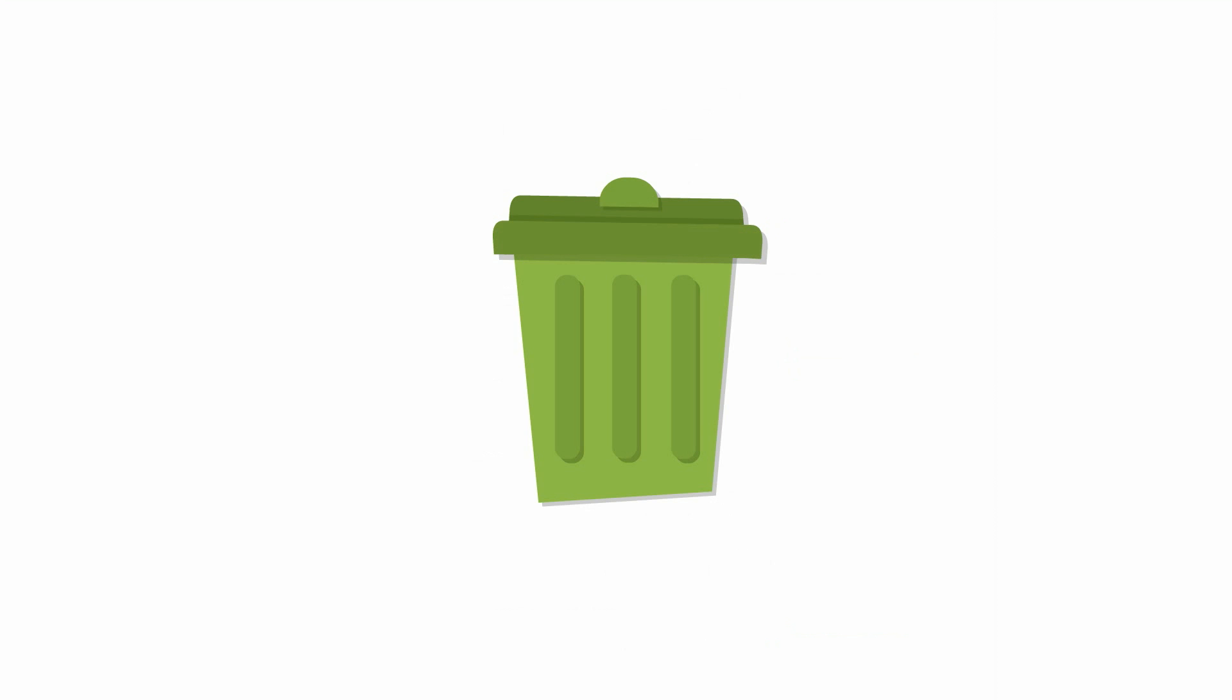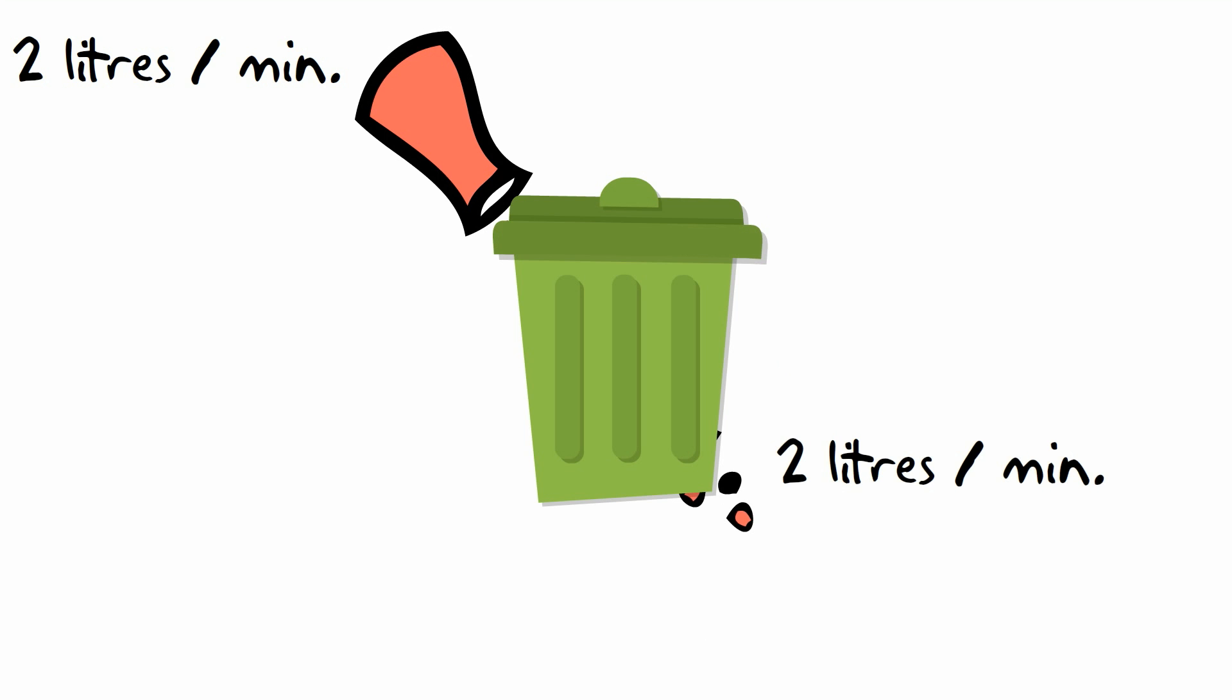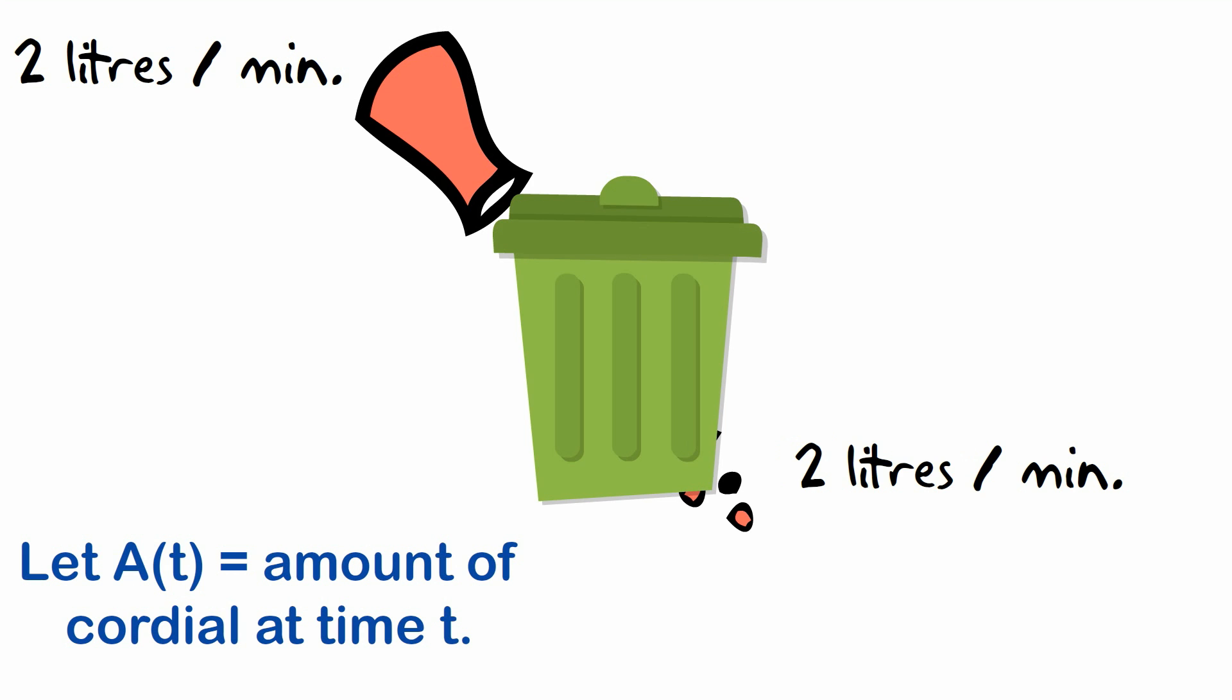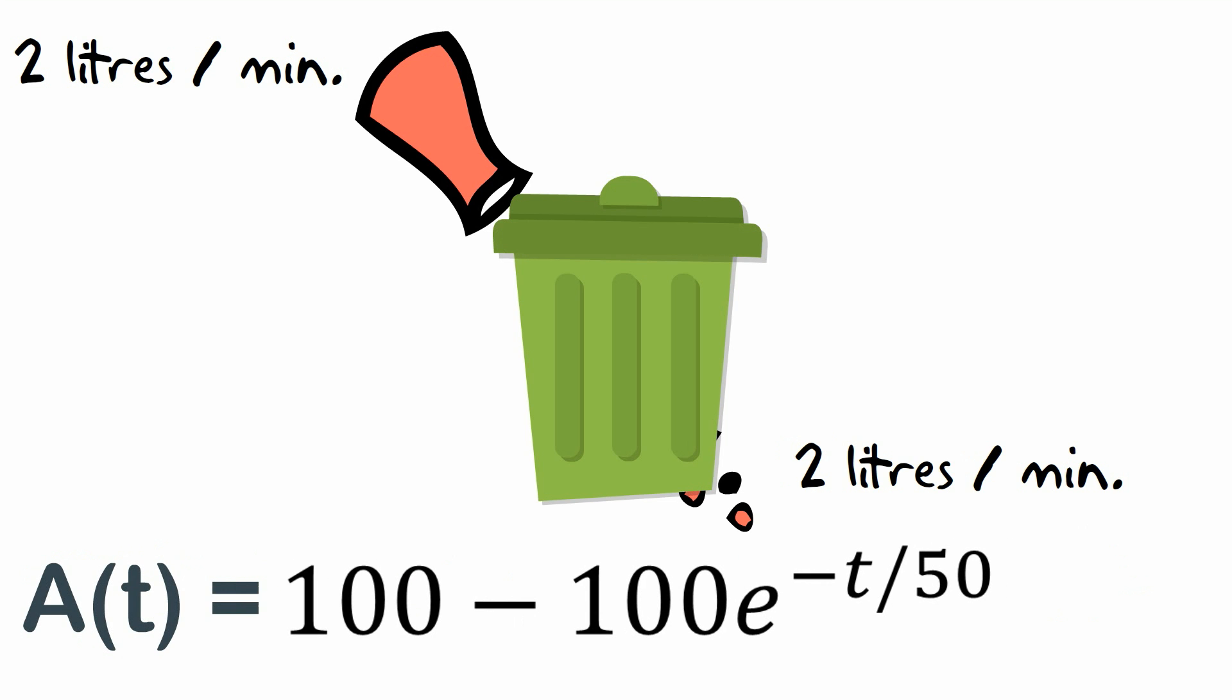This one where we pour oil into a bin which has water. Several people pointed out that oil and water don't mix so you might prefer to think of this as cordial or whatever. But once again as we did previously we can construct a differential equation based on what we're told here. So if we let a(t) equal the amount of cordial in the bin at time t then we know that the rate of change of a, in other words da/dt is equal to 2 because 2 litres of cordial is going in per minute and minus a(t) on 50 because we know that 1/50th of the mixture is flowing out at the bottom. And once we have that in a similar way to what we saw before with the differential equation it's just a question of solving that differential equation which will throw up the number e in the solution.